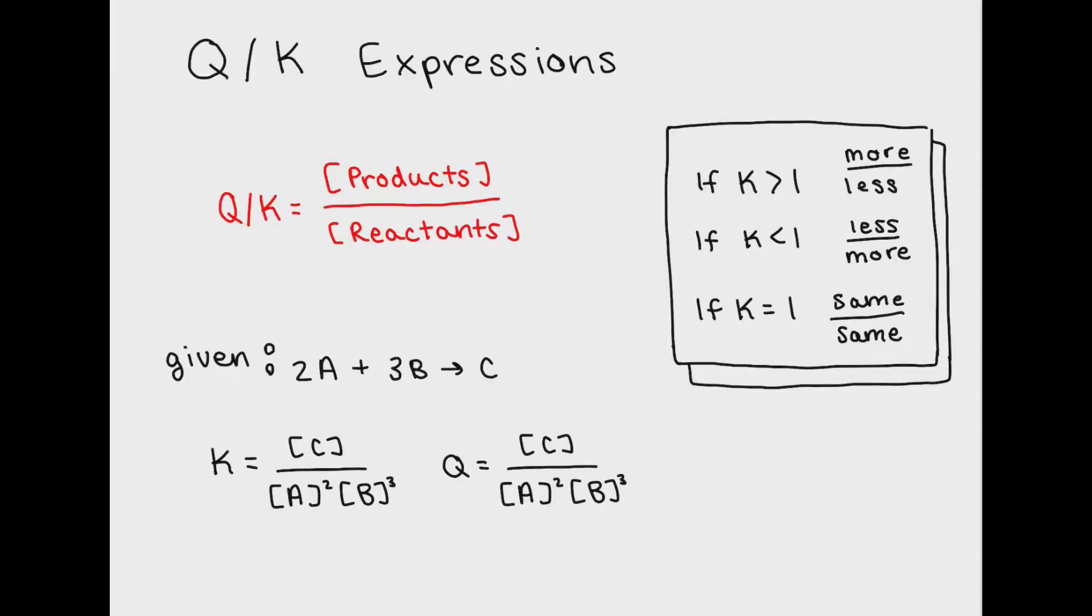So here's what an expression for a KEQ equation looks like. Notice that it's always going to be products over reactants. You should also notice that the coefficients in front of a variable, like 2 in front of A and 3 in front of B, represent the exponents in the K expression. This means that the concentration of A is raised to the 2 power, and concentration of B is raised to the 3.